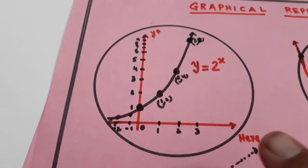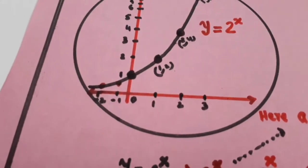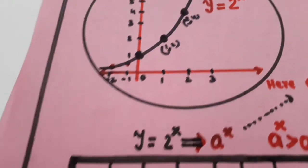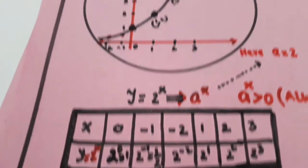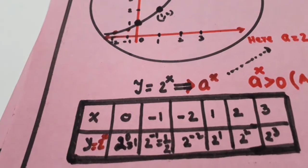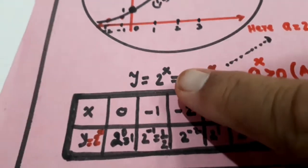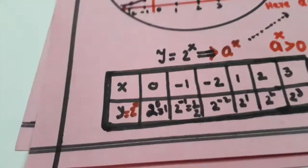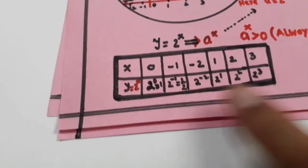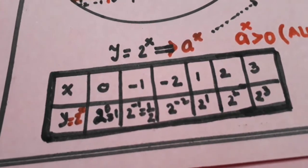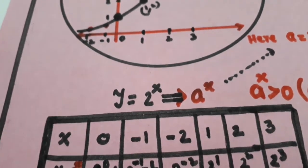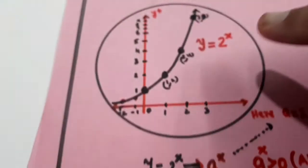Now let us go further. This is the graph, this is 2 raised to power x. Now this graph how can you make it, just like in 10th class when you make it. X key value is 0, look here, if x key value is 0, 2 key power 0 is 1. Similarly put x is equal to minus 1, it will become 2 raised to minus 1, which is half.